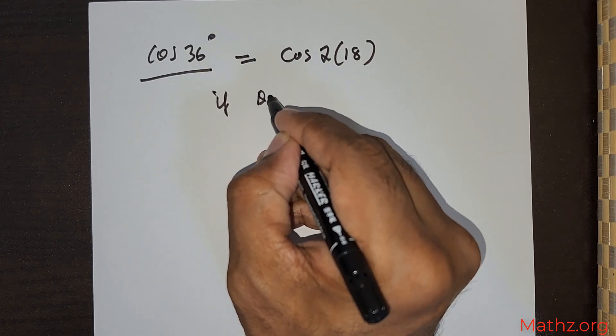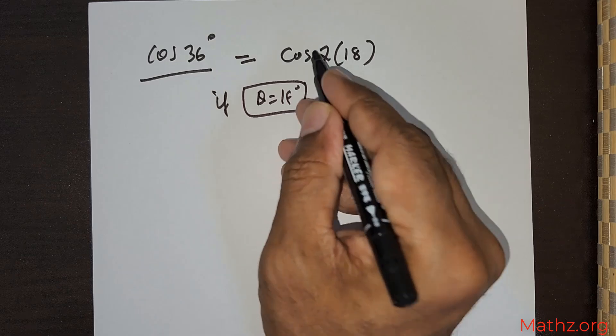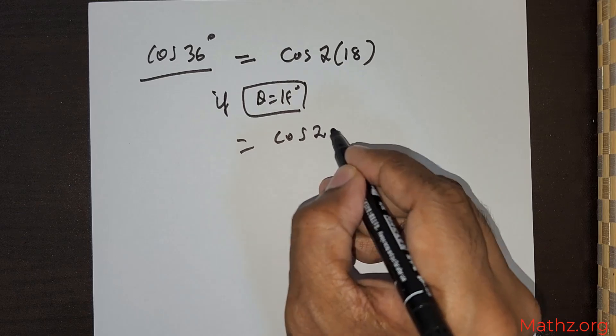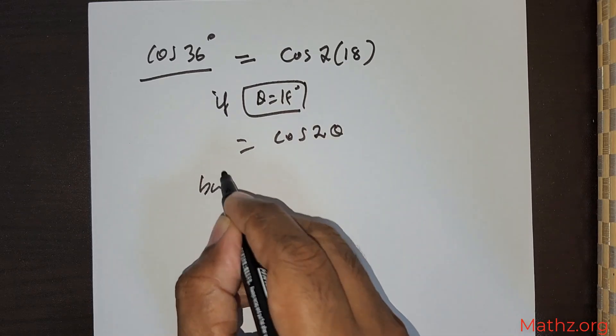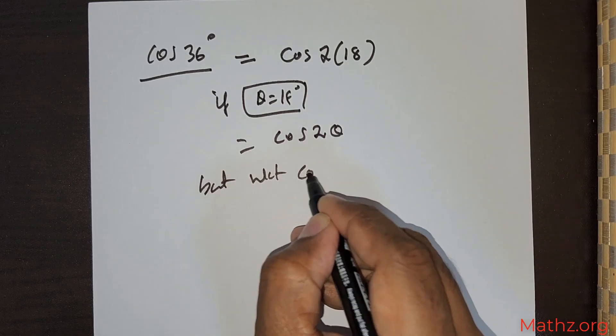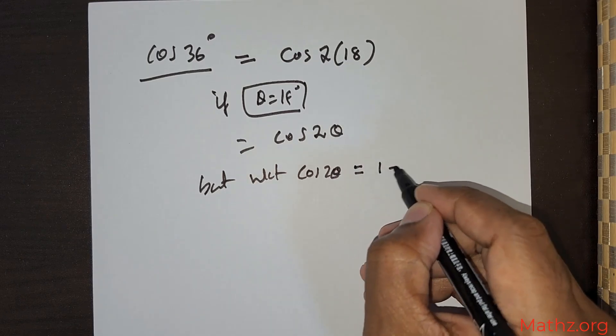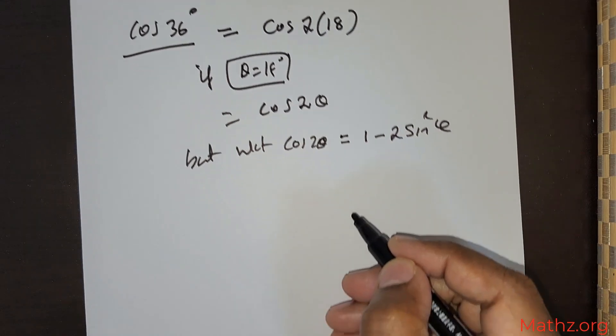If I were to take theta equal to 18 degrees, then this is going to be cos 2θ. But we know that cos 2θ = 1 - 2sin²θ.